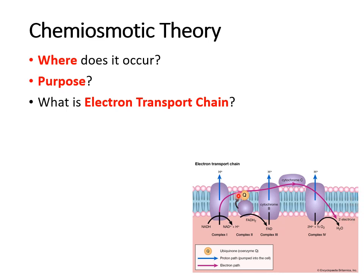The electron transport chain involves a series of combined redox reactions as electrons are passed from different parts of the chain. Redox means reduction and oxidation — one part of the reaction gains electrons and the other loses electrons.